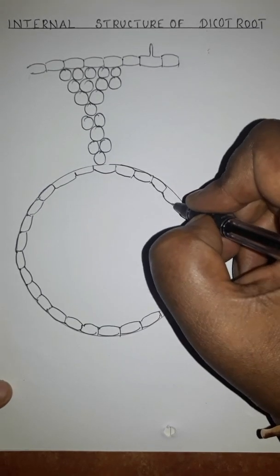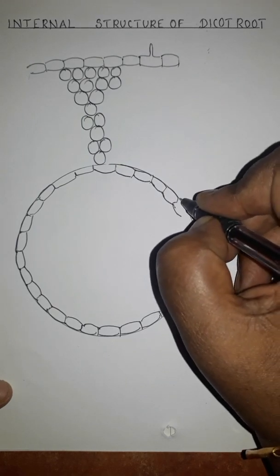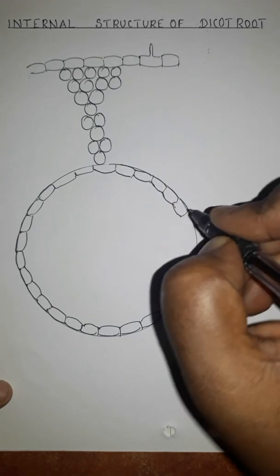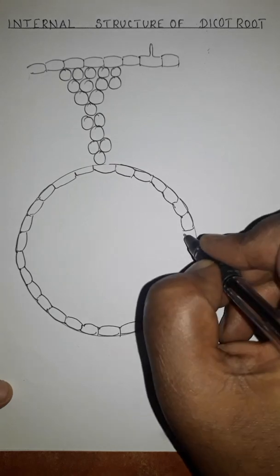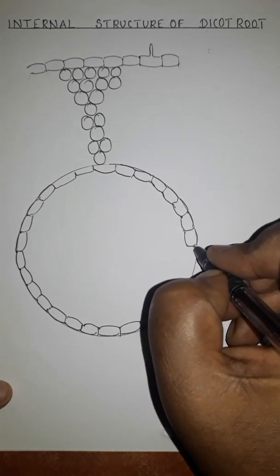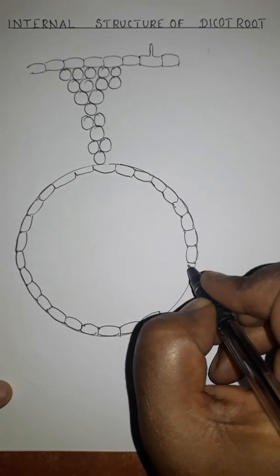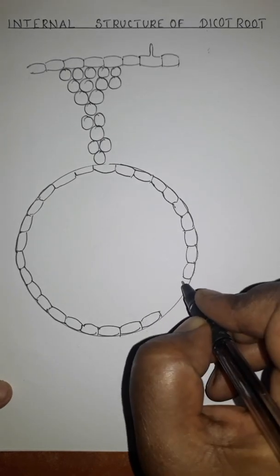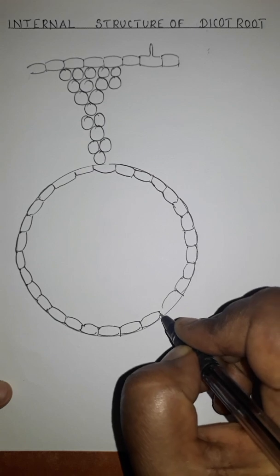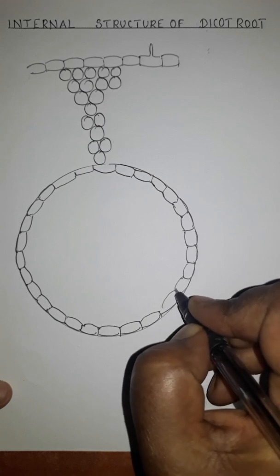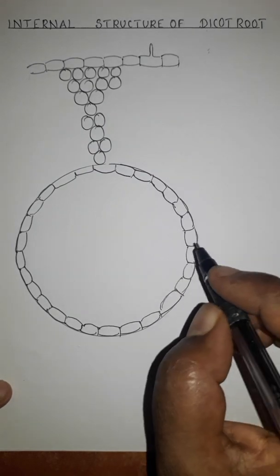The endodermis has thick walls due to casparian thickenings. However, the endodermis cells that are opposite to the xylem are thin walled, because they have to conduct water.